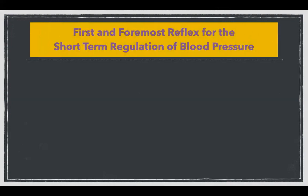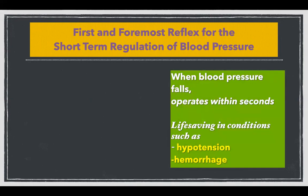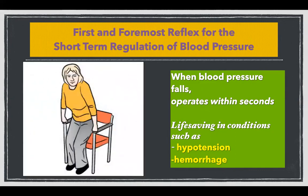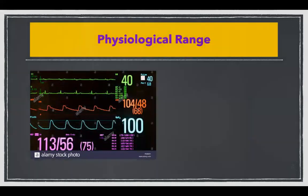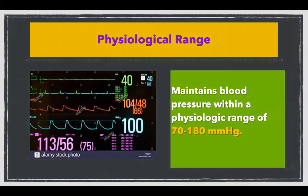To sum up, the baroreceptor reflex is the first and foremost reflex for the regulation of blood pressure. It operates within seconds, making it life-saving in day-to-day conditions such as rising from a sitting position and in conditions such as loss of large amounts of blood such as hemorrhage. It operates within a physiological range, maintaining blood pressure within 70 to 180 millimeters of mercury.